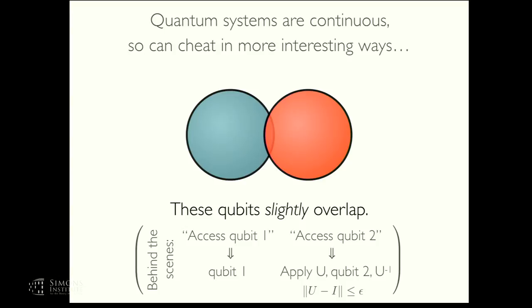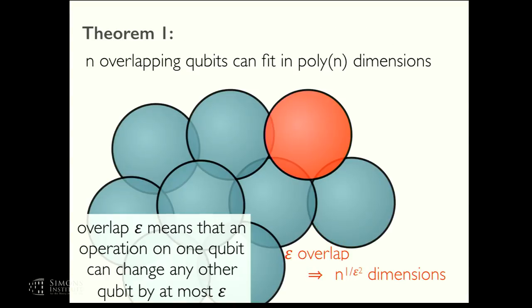So we could, of course, imagine the same thing happening quantumly, that our 64 million qubit system is being packed into just a much smaller one. But in fact, quantum systems can cheat in more interesting ways than the classical systems can. In particular, you can have two qubits that are not entirely on top of each other, but they just slightly overlap. So mathematically, what it means for qubits to overlap is that an operation on one of them can just slightly, perhaps by epsilon, affect the other qubit.